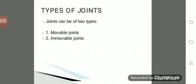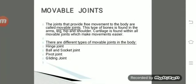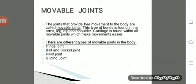There are two types of joints: movable joints and immovable joints. An immovable joint, or fixed joint, is where two bones are joined together but show very little or no movement. This includes joints between the bones of the skull, joints in the pelvis, and joints between the teeth and the jaw.